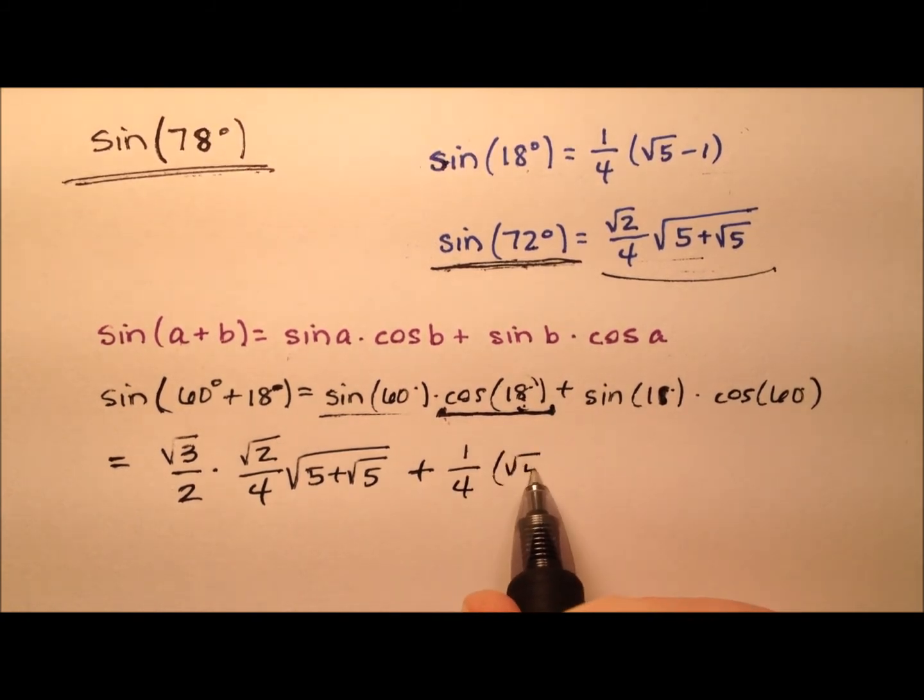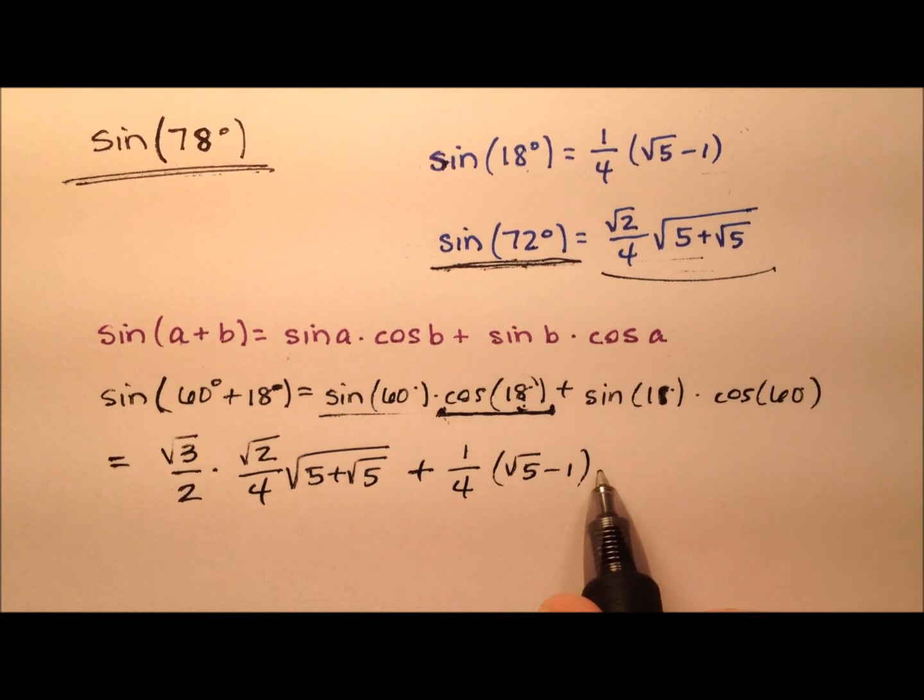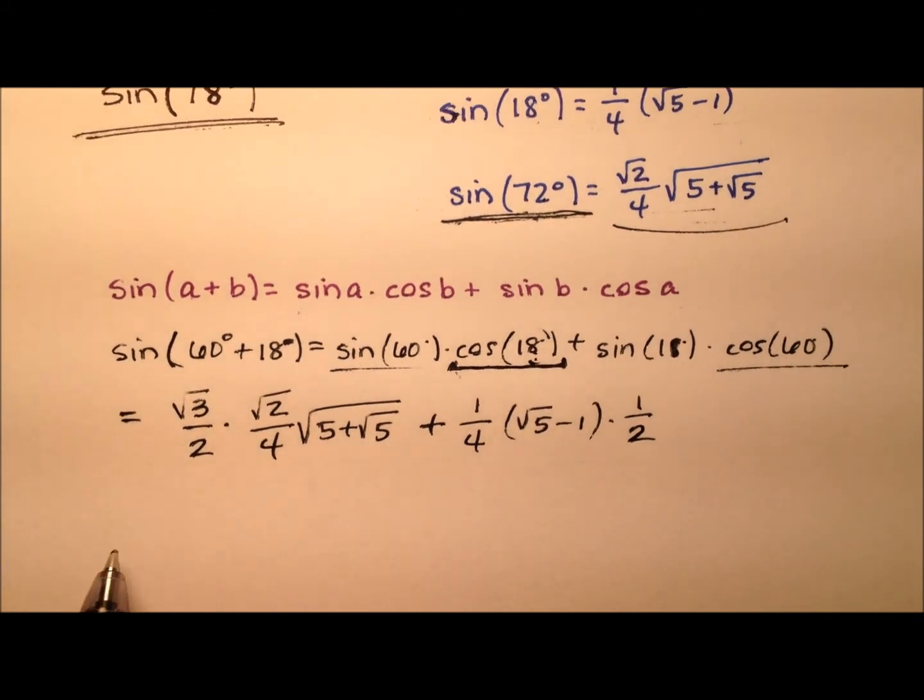And to this product, we'll add the sine of 18 degrees, which is 1 fourth times the square root of 5 minus 1, times the cosine of 60. And of course, that's just 1 half.